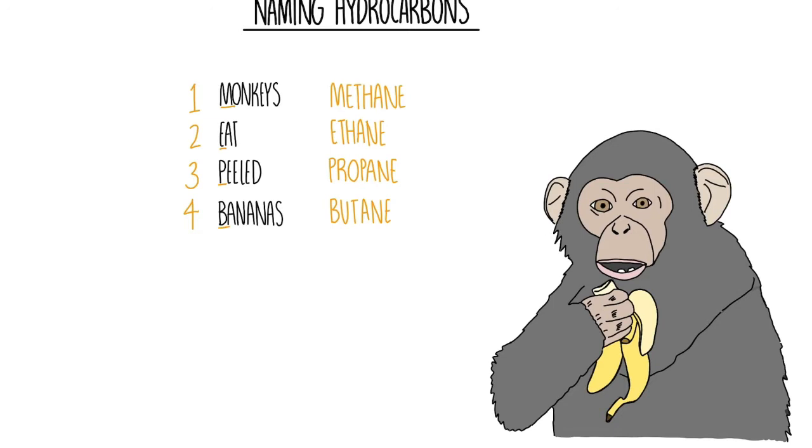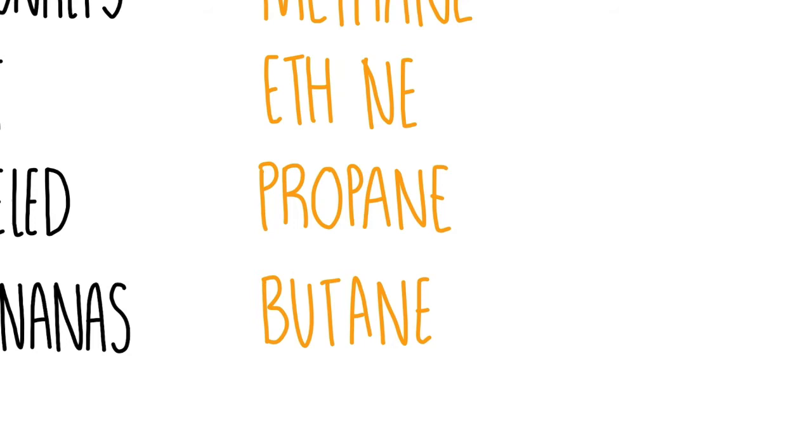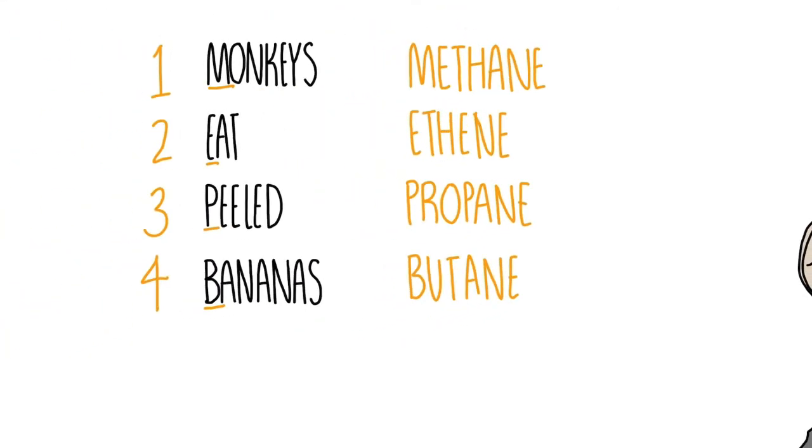You use those prefixes, and then the ending comes from what type of molecule it was. The ones I've written out here for alkanes, if it was an alkene, something with a double carbon bond, you would replace the A with an E. So ethane becomes ethene, propane becomes propene, butane becomes butene. You can't have an alkene with one. You don't get methene because you can't have a double carbon bond with just one carbon.